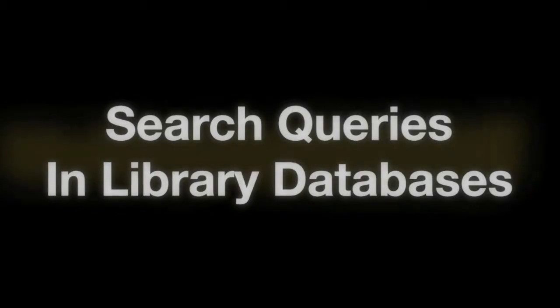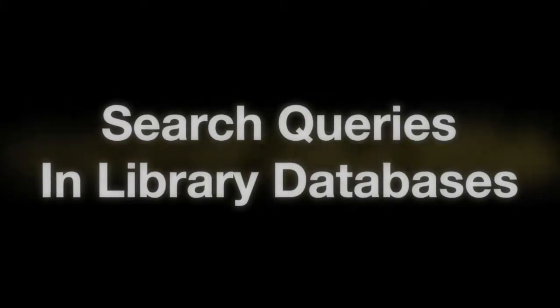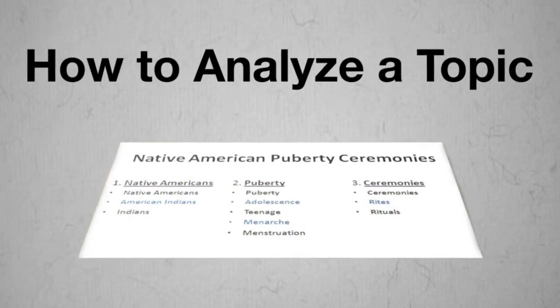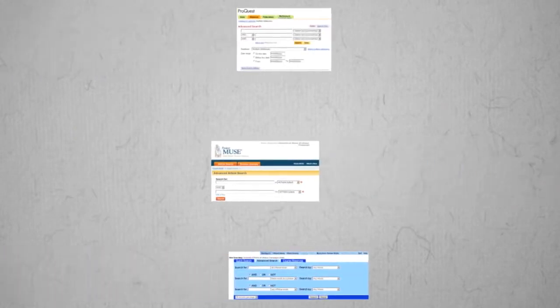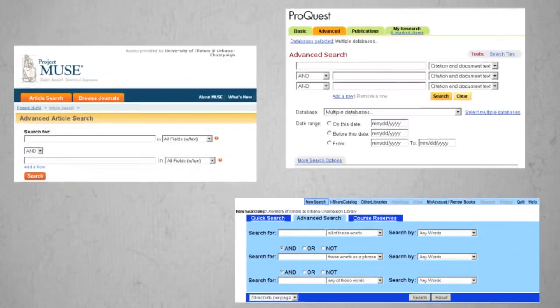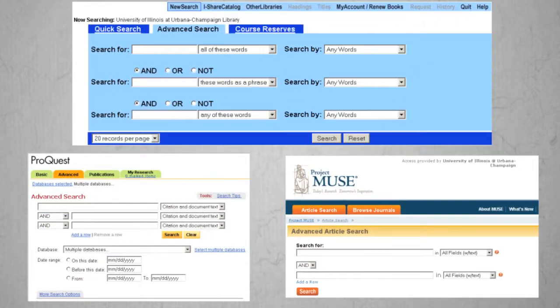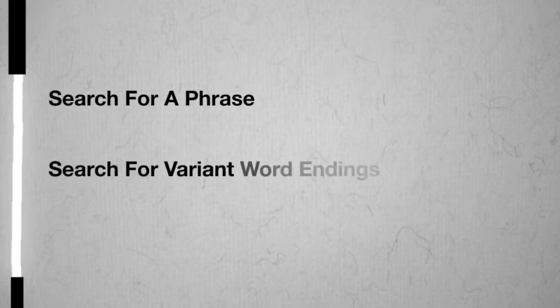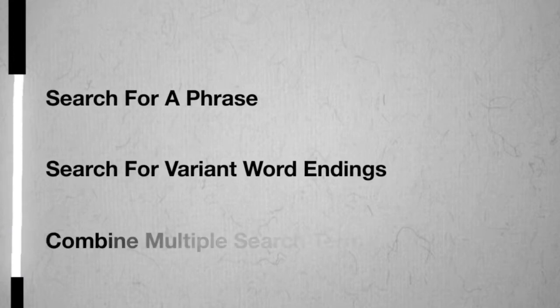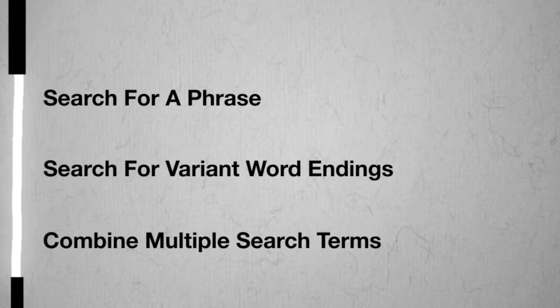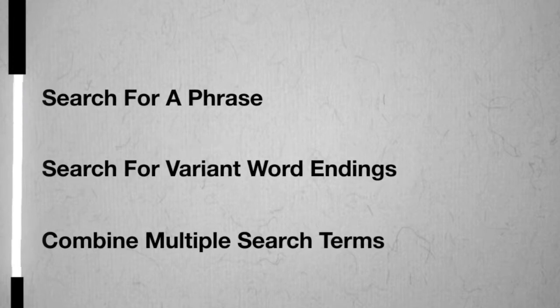This video is about search queries in library databases. In the last video we showed you how to analyze a topic. In this video you will learn to use the results of that analysis in an actual search. To search library databases successfully you must be able to search for a phrase, to search for variant word endings with a single query, and to combine multiple search terms from different facets into a single query.